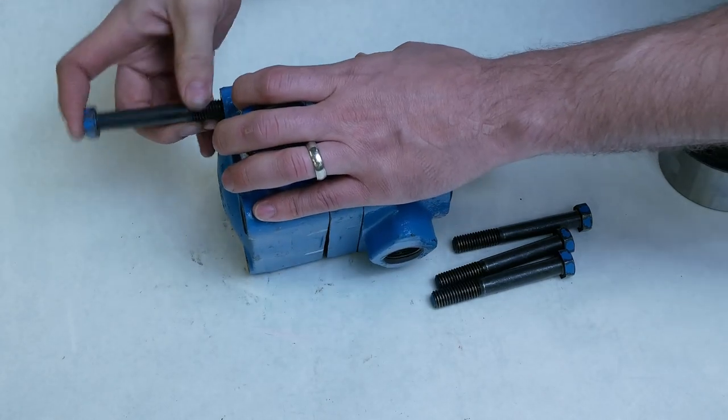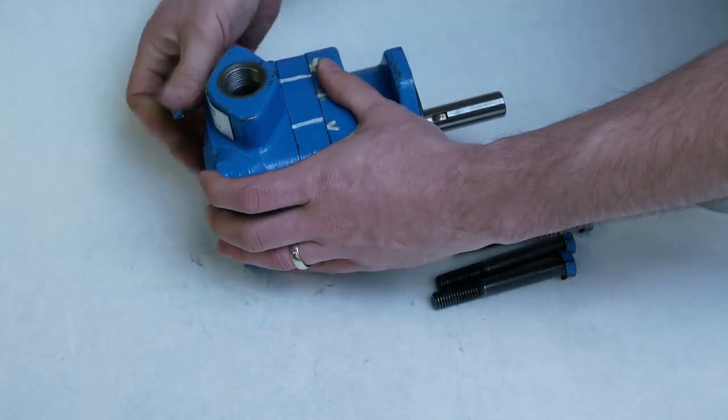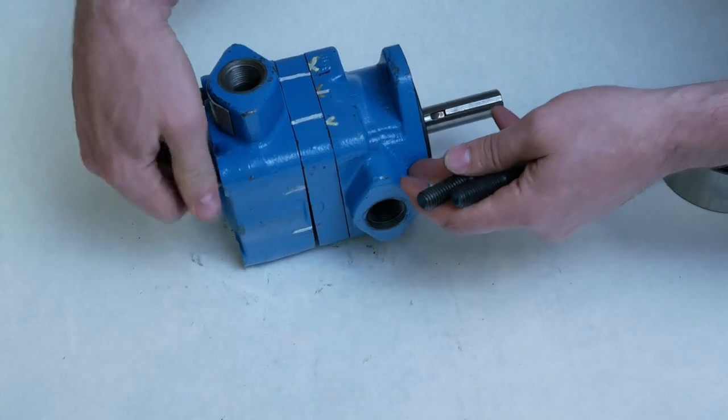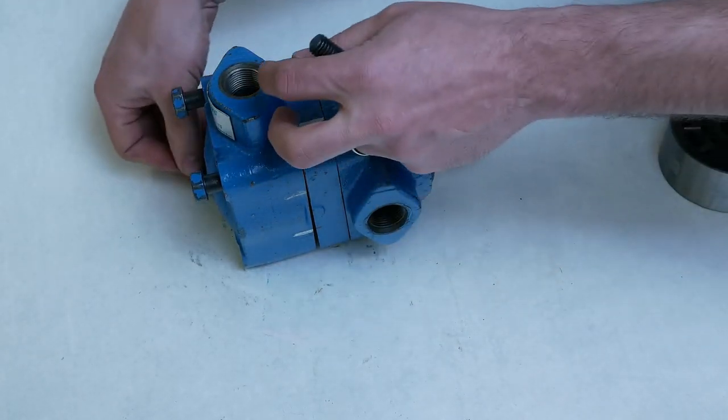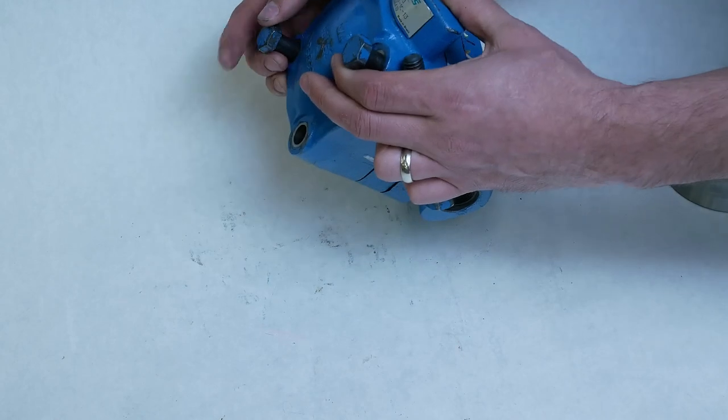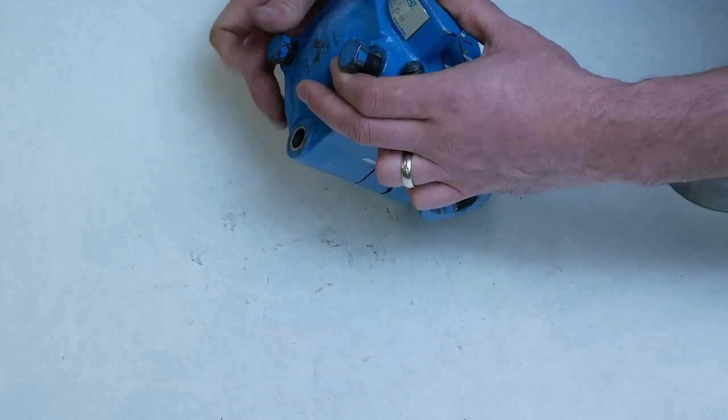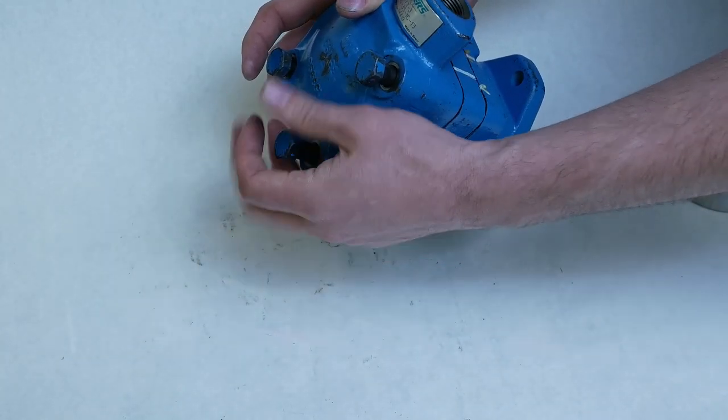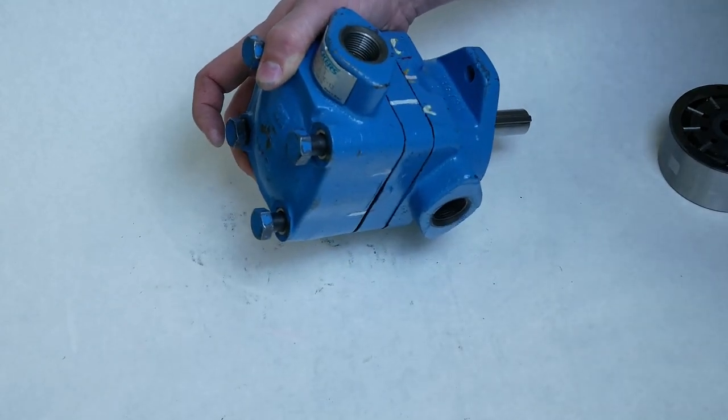So of course if you want to rebuild one of these and put it back in the same application indexing and marking the housing will be very helpful to make sure you put it back in the correct orientation. But know if you do buy a remand or a rebuilt vane motor and it's been assembled incorrectly indexed then it's quite simply just pulling four bolts and rotating the housing and putting them back in that would fix that.